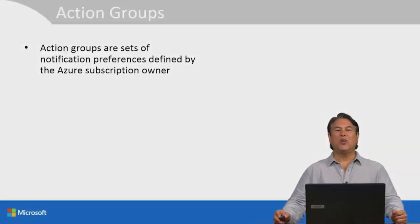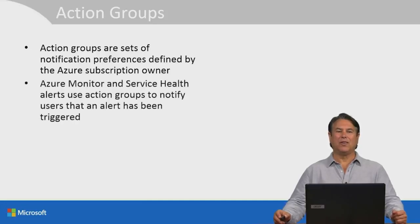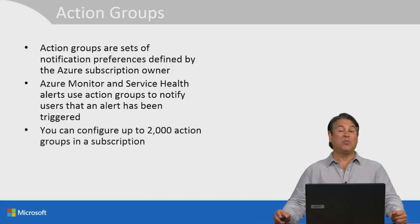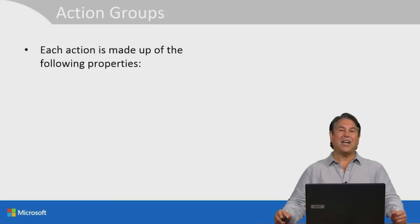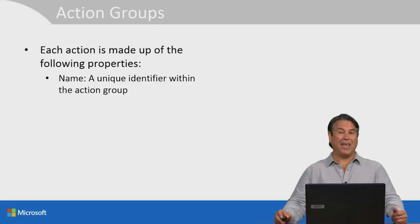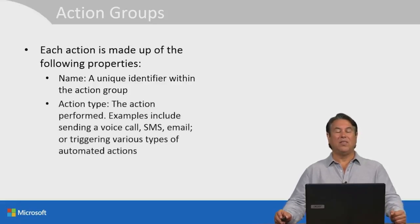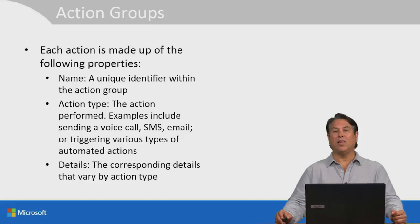Each action is made up of the following properties: the name, which is a unique identifier within the action group; the action type; the action performed — examples would be a voice call, SMS, email, or triggering various types of automated actions; and details, the corresponding details that vary by action type. Let's go to the demo and check out action groups.